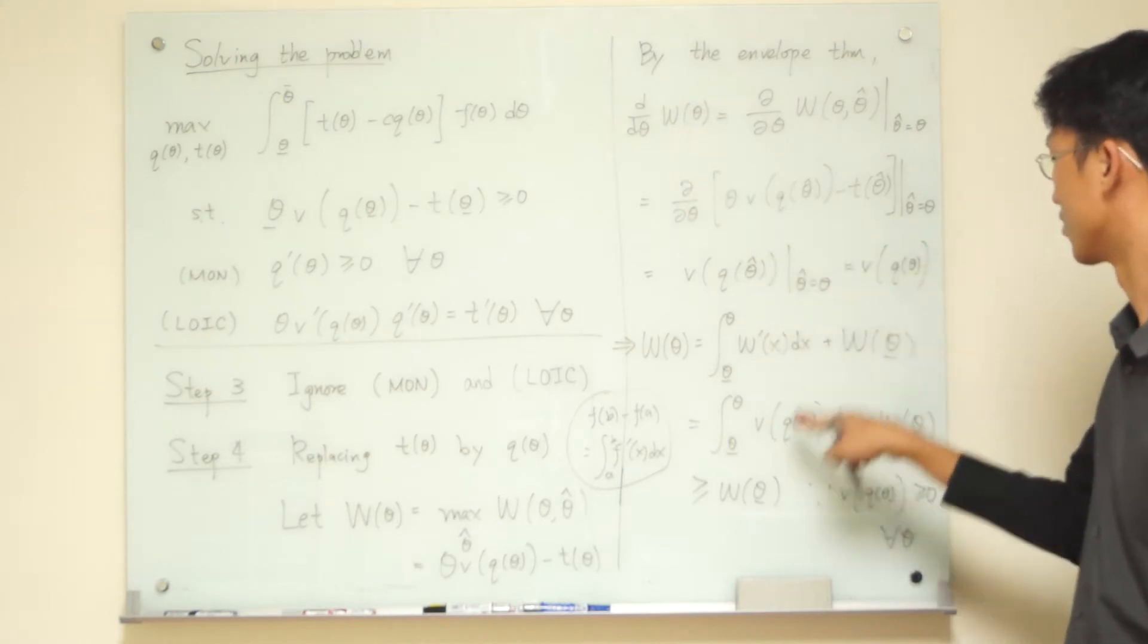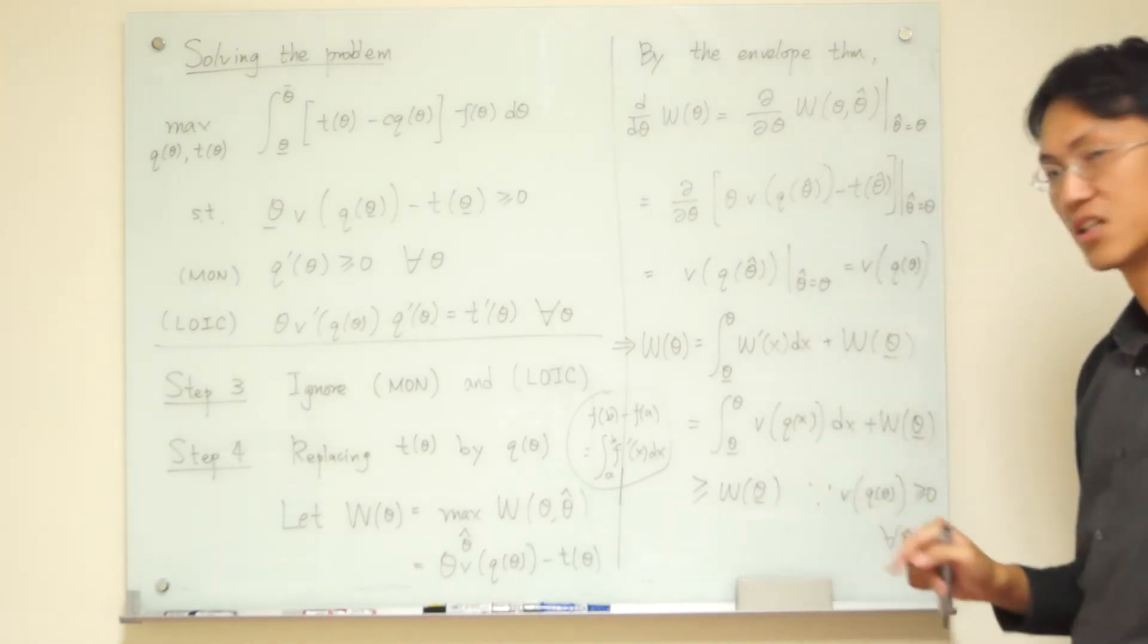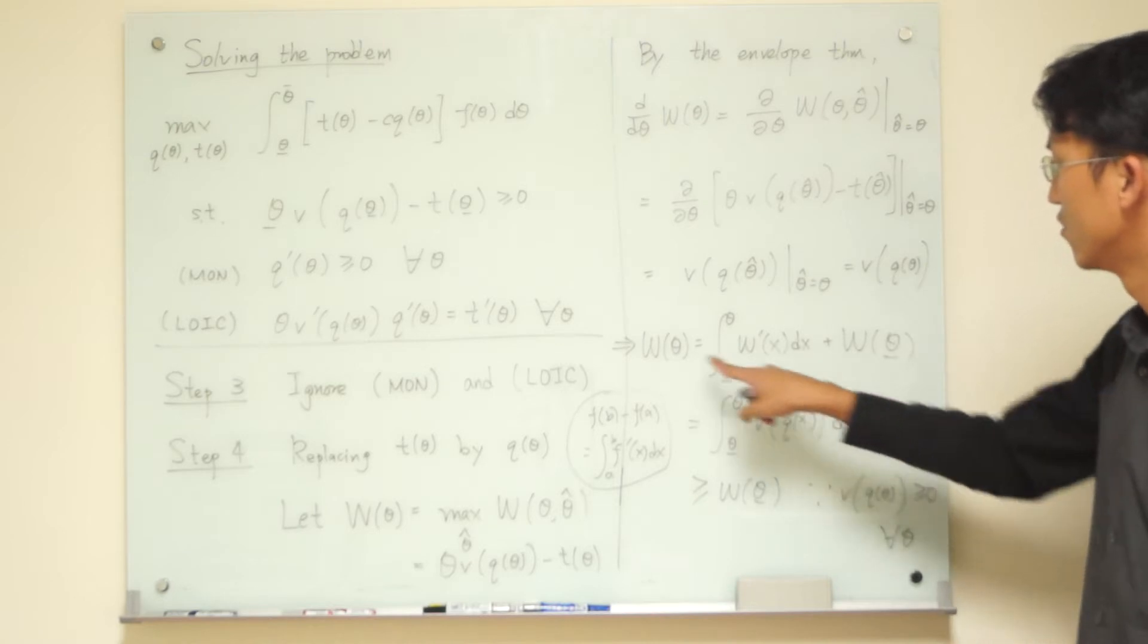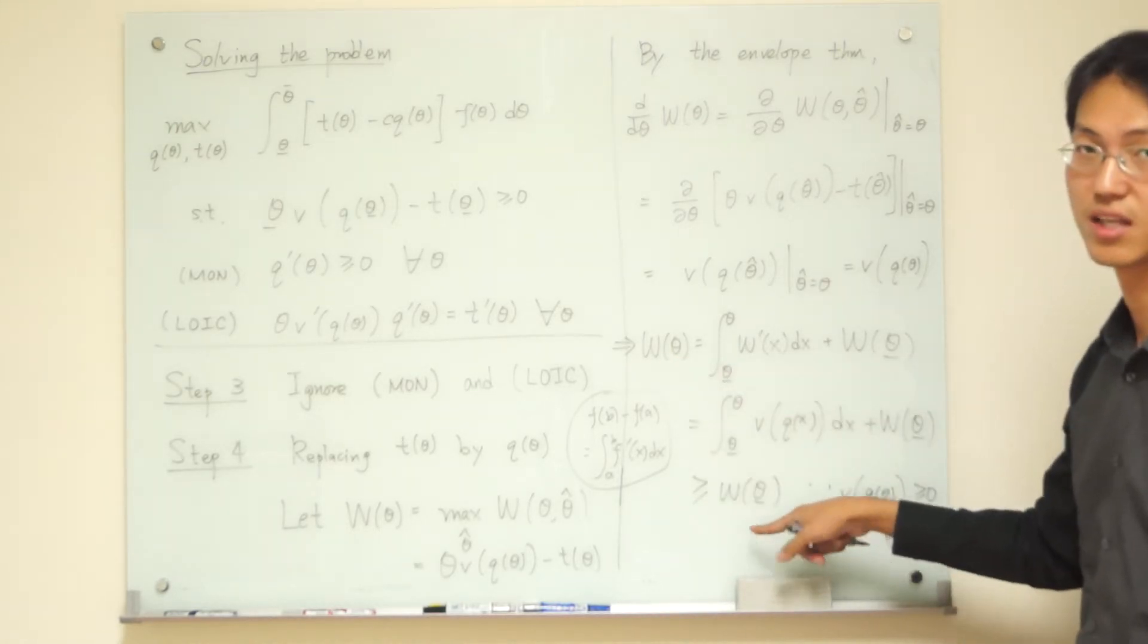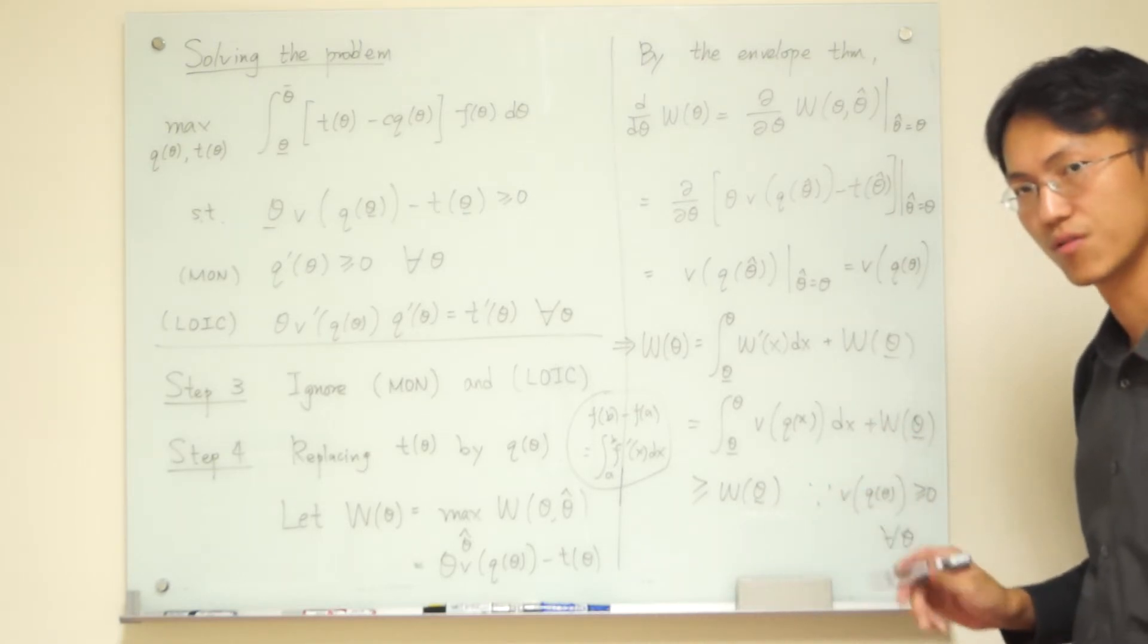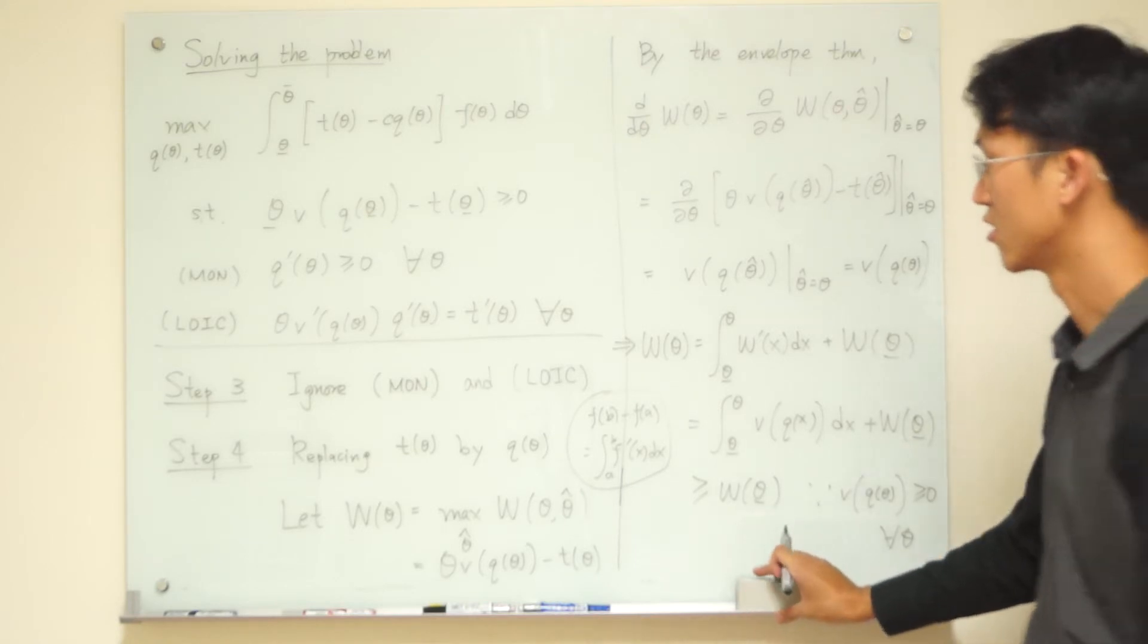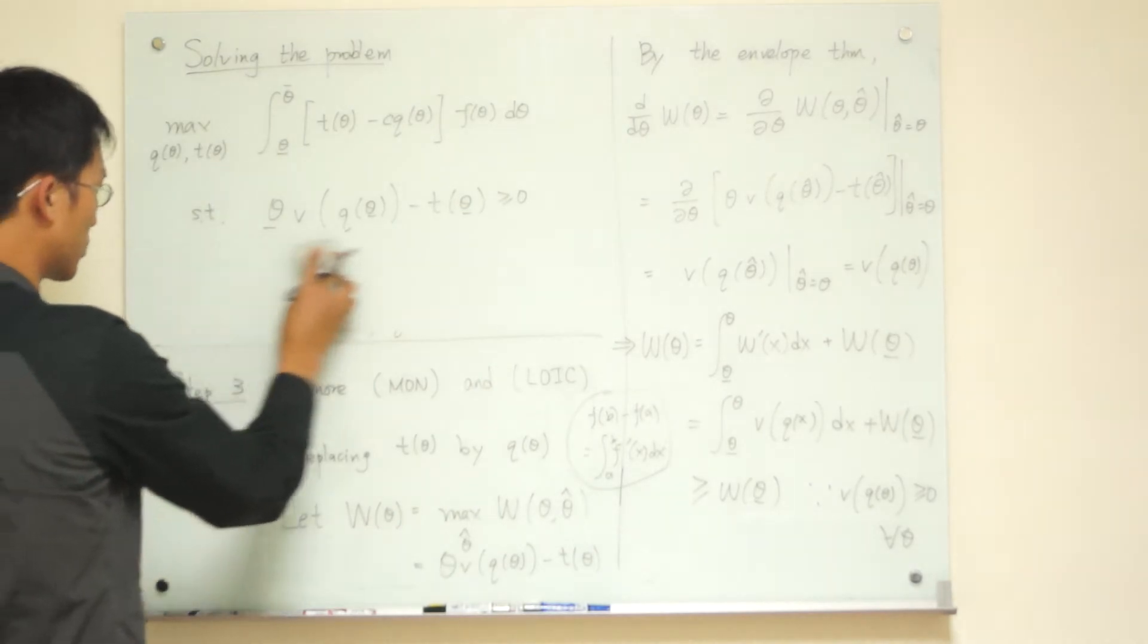And then, W prime has been found to be this one. Right? And then, here, immediately, because V function is always non-negative. So, we know for all other types, they can earn something that is better or larger than W of theta lower bar. So, let me use a graph to discuss this with you.